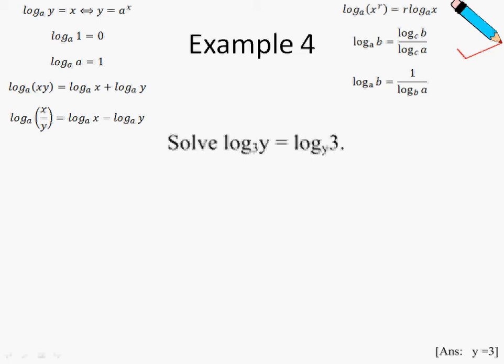This can be written as 1 over log 3y. The next thing I'm going to do, I will multiply both sides by log 3y. So this will just give me log 3y squared equals to 1. And from here, by taking square root of both sides, I will have log 3y equals to 1 or log 3y equals to negative 1.